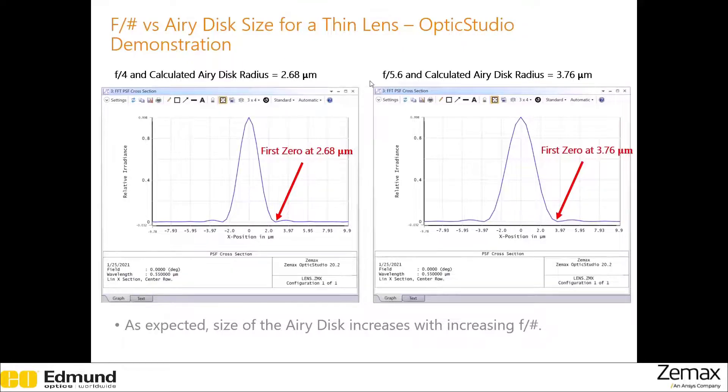And if we increase the f-number to 5.6, the spot size gets even larger. As expected, the size of Airy disc increases with increasing f-number.